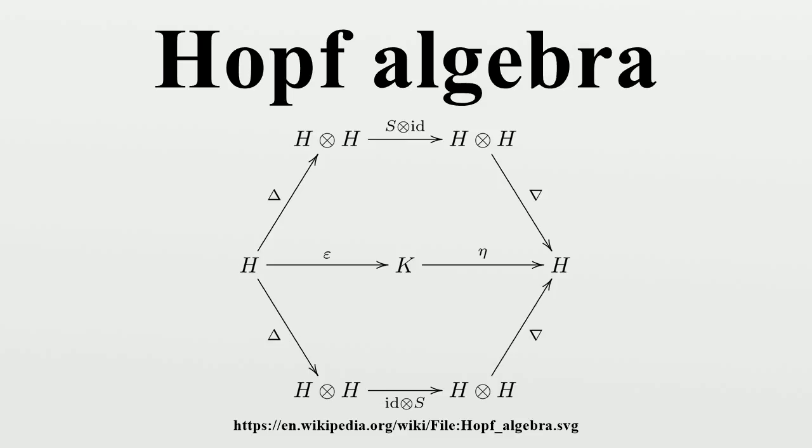Representation Theory: Let A be a Hopf algebra, and let M and N be A-modules. Then M⊗N is also an A-module, with a⋅(m⊗n)=∑(a₁⋅m)⊗(a₂⋅n) for m∈M, n∈N and Δ(a)=∑a₁⊗a₂. Furthermore, we can define the trivial representation as the base field K with ε(a)⋅k for k∈K.